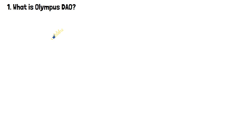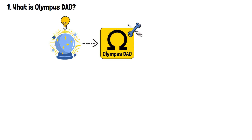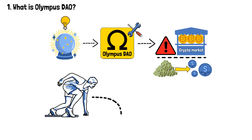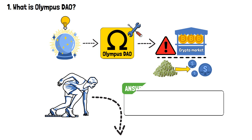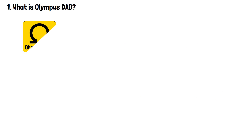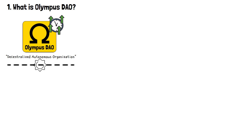Now, having established a clear definition of these concepts, it's easier to understand what I meant when I said that Olympus DAO was created to solve the problem of the cryptocurrency market being too reliant on fiat-backed stablecoins. So, Olympus DAO is an innovative decentralized autonomous organization that operates on the Ethereum blockchain.